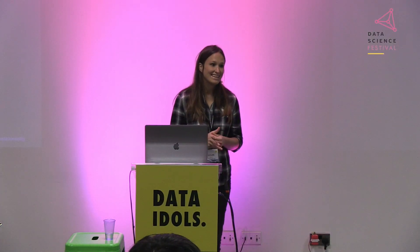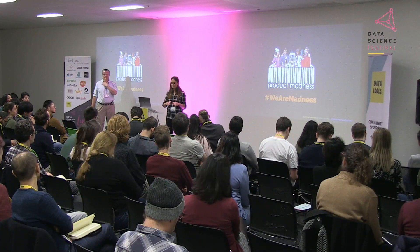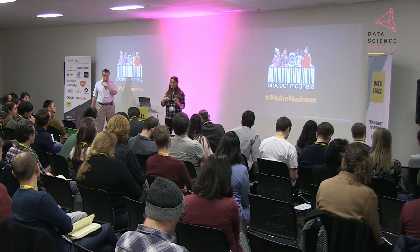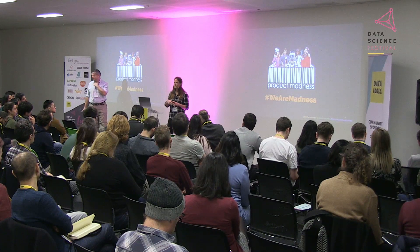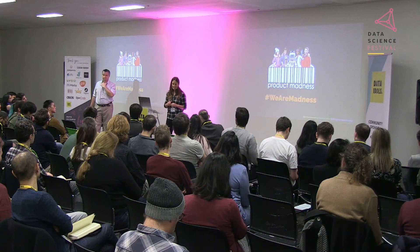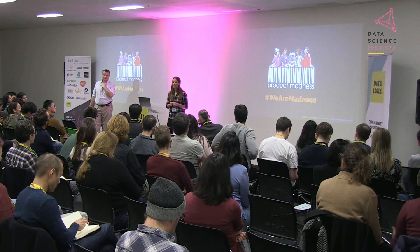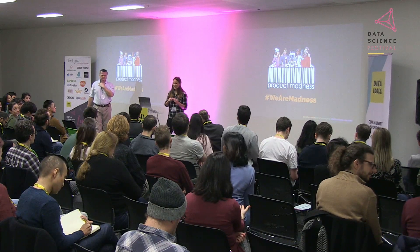At Product Madness, data science is involved from the design stage, implementation, analysis, interpretation, and decision-making. Regarding the observational study question: we do have cases like that. For example, if we have a sale where it's not possible to do an A/B test, we might look at seasonality models — predicting what you would expect to happen if we carried on, seeing what actually happened, and getting an idea of the difference.